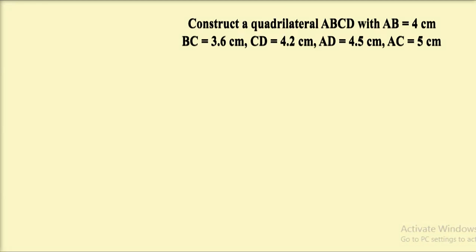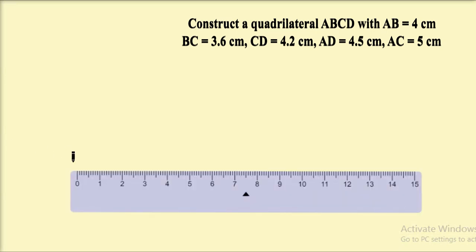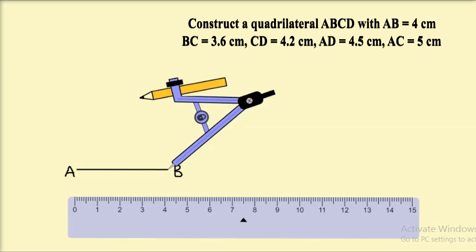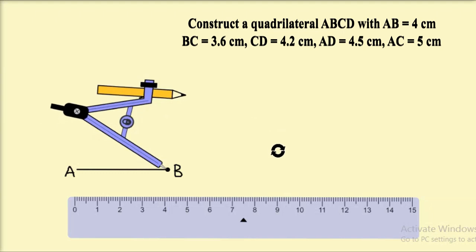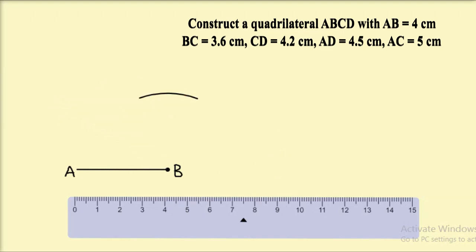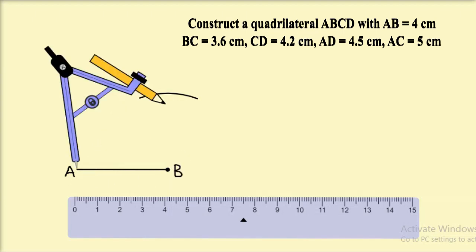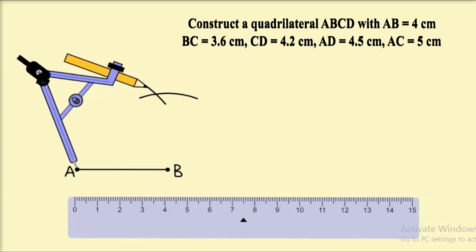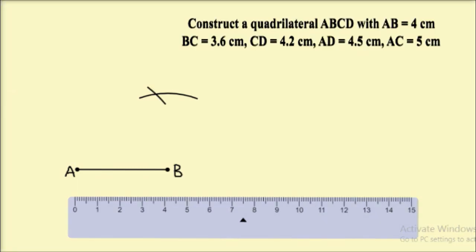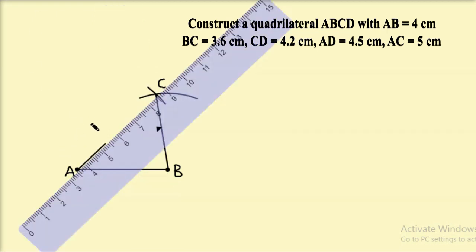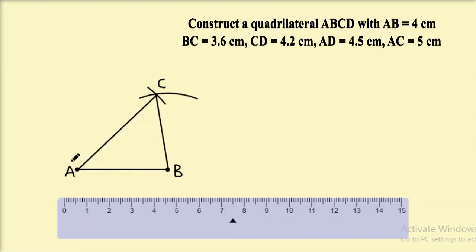Now we start the actual construction. We are going to draw triangle ABC using AB, BC, and AC. First draw line segment AB of length 4 cm. Then mark BC equal to 3.6 cm using a compass, and with B as center and radius 3.6 cm, draw an arc above line segment AB. Then to locate vertex C, take AC equal to 5 cm as the radius, with A as center, and draw an arc intersecting the previous arc. Mark the intersection point as C, then join B and C, and join A and C. We now have triangle ABC.